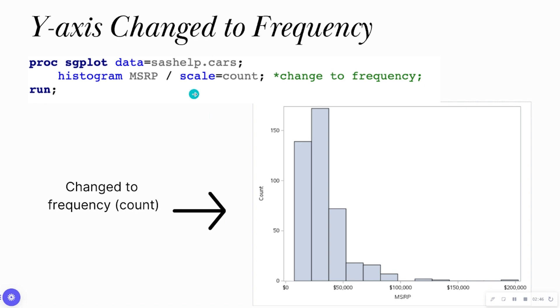So if we want to change it from percent to frequency, we can use this scale equals count. This is an option available to us. Notice that all options come after this forward slash here. Okay, so now our histogram, we see counts on the Y-axis versus percent.